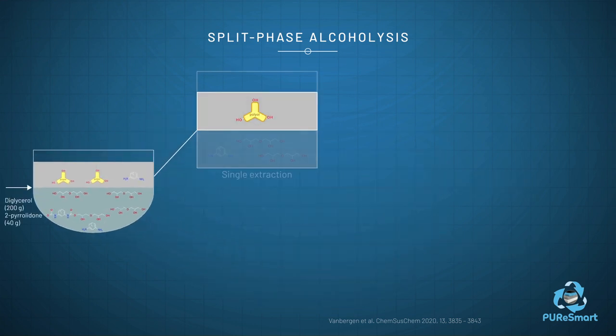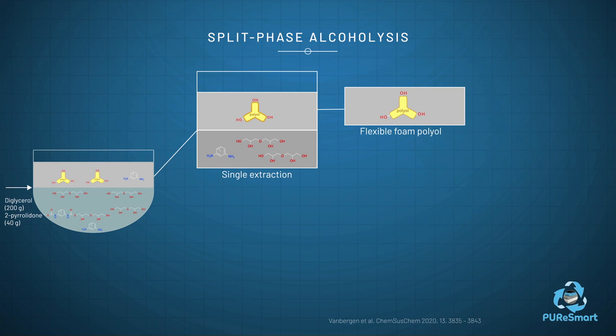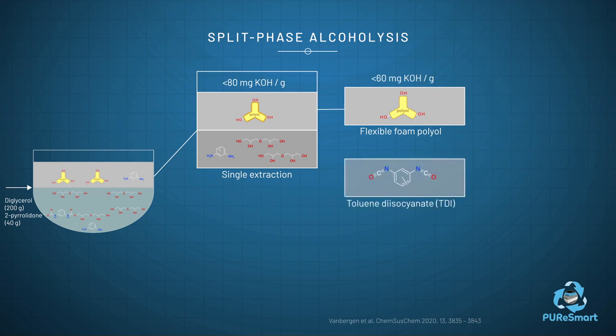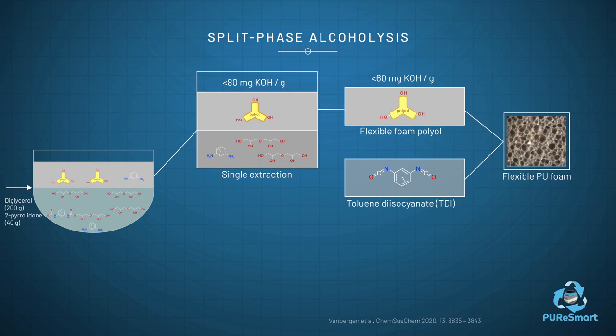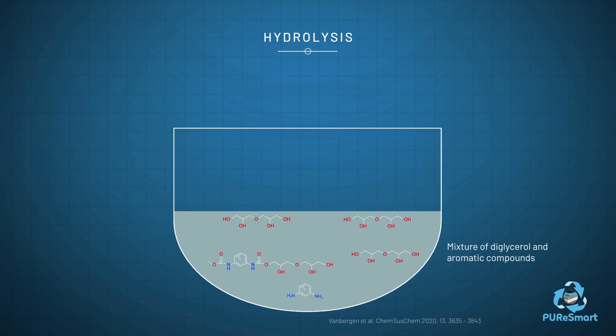A single washing treatment with diglycerol allows to further lower the hydroxyl value from around 80 mg potassium hydroxide per gram to 60, recovering a polyether polyol suitable for the synthesis of new flexible polyurethane foam. However, the aromatic compounds in the lower phase need to be valorised in order to improve the economic feasibility.